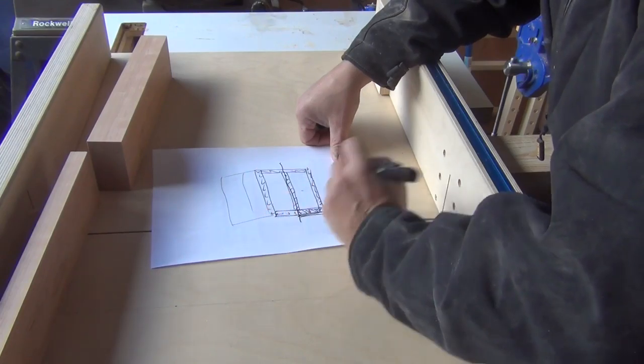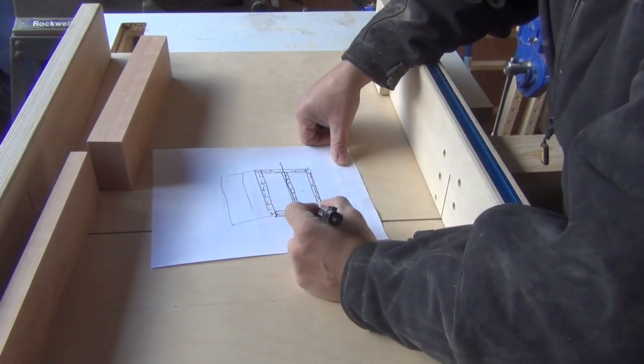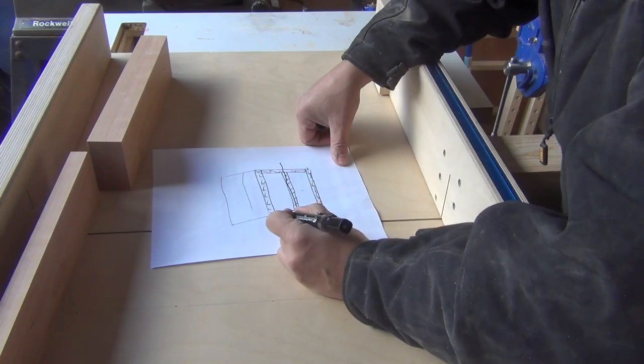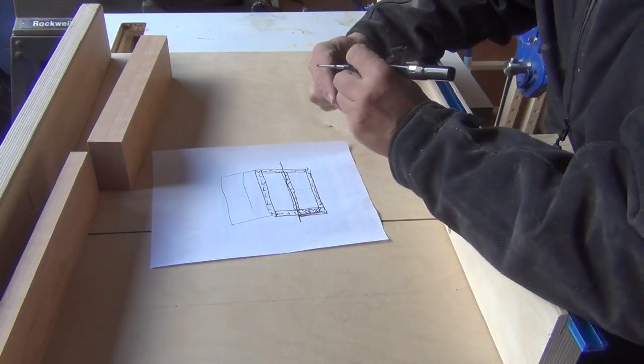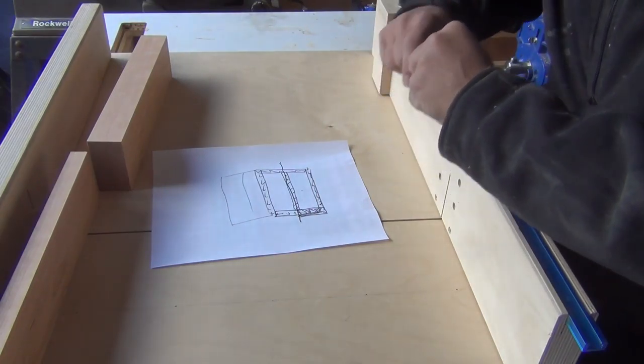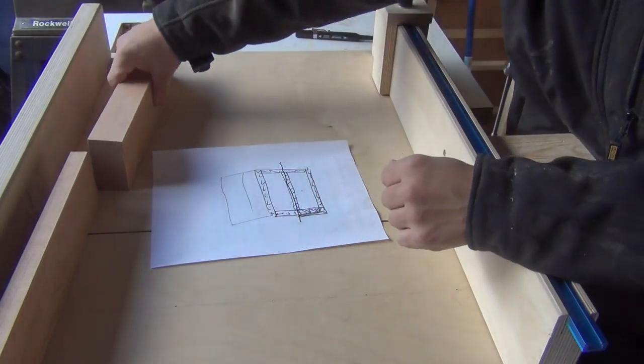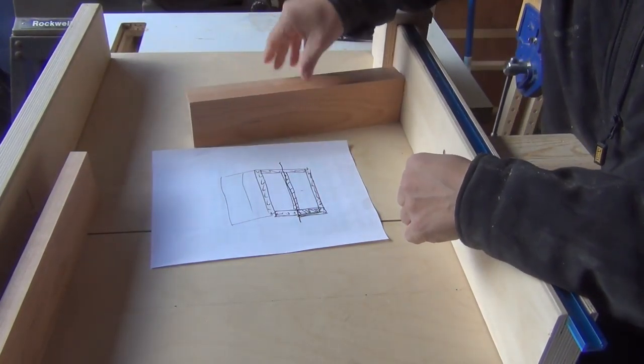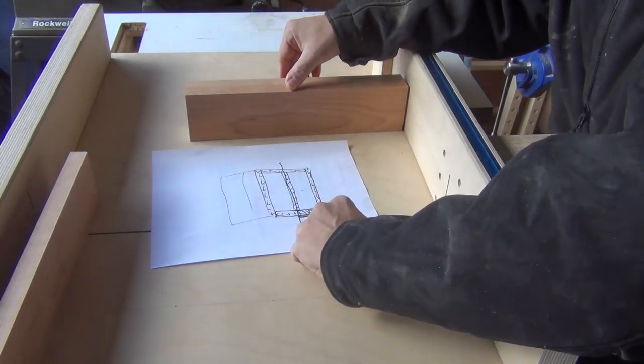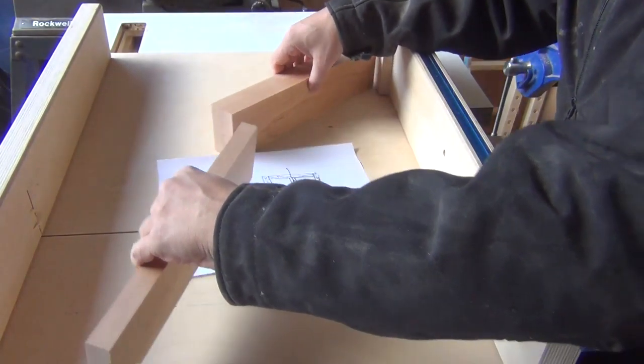And so what this means is that these components here need to be thick. They're part of the frame. Whereas these components, which need to look as if they're all one piece of wood, will actually be thinner and will be part of the door frame.